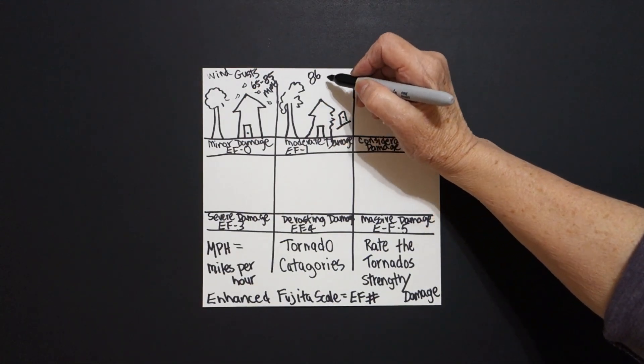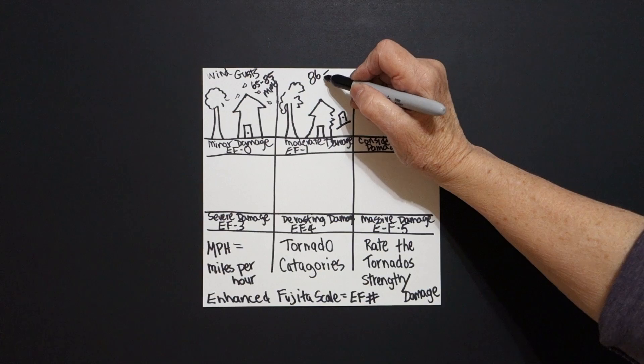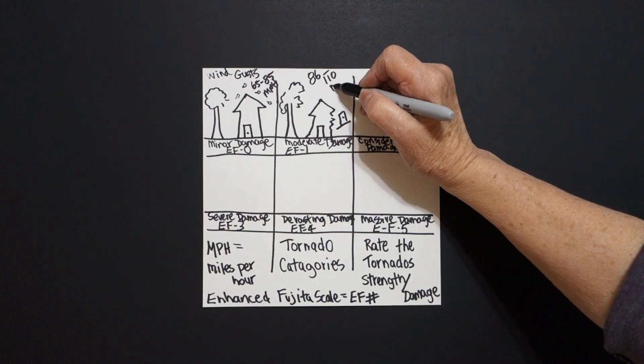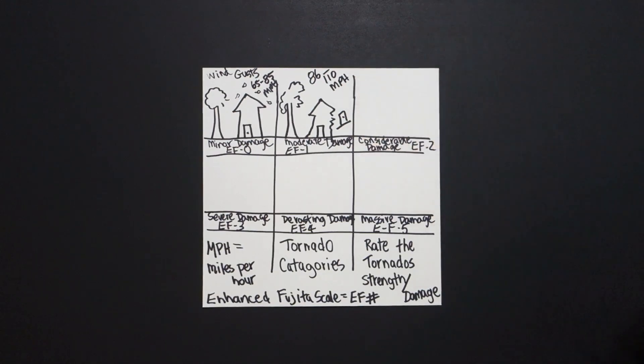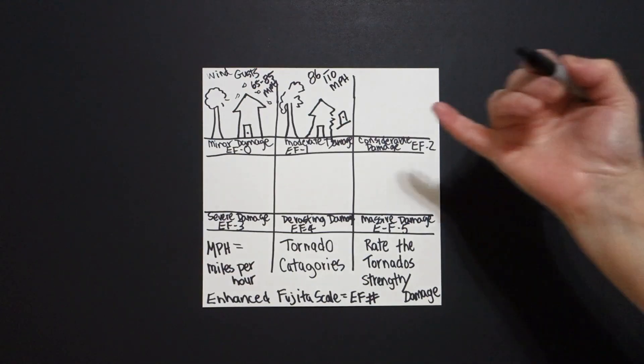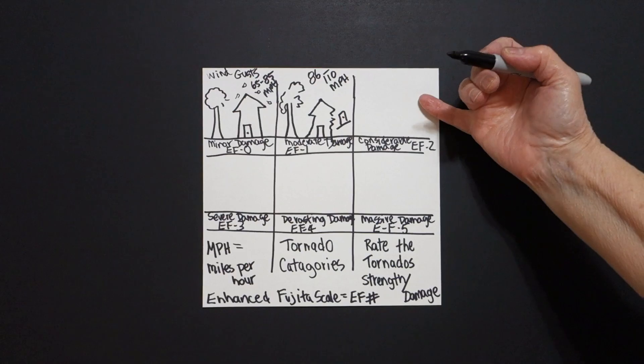Alright, what is this? This is 86 to 110 MPH, miles per hour. Moderate damage from an EF-1 tornado. Next box.